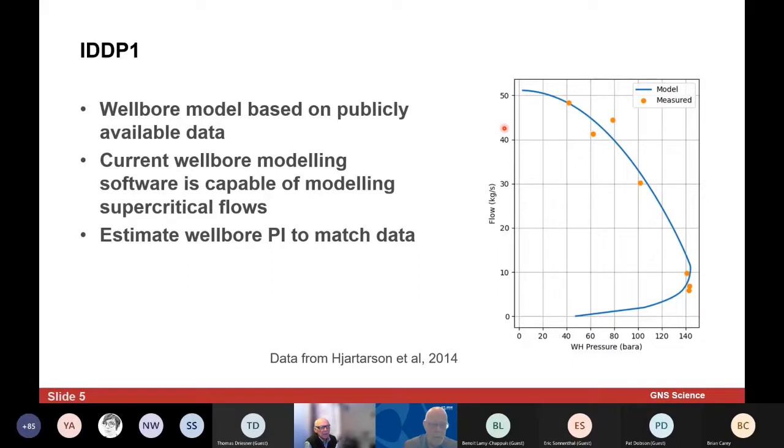We've got this approach of being able to estimate output from a well, but can it work with these supercritical wells? So I decided to have a look at IDDP1, which again has been discussed a little bit in previous talks. I tried to put together a wellbore model based on publicly available data, and you can see here the match of that model to the output curve. Again, this is measured output in the orange dots and then the model to it, so it's a really good fit for this.